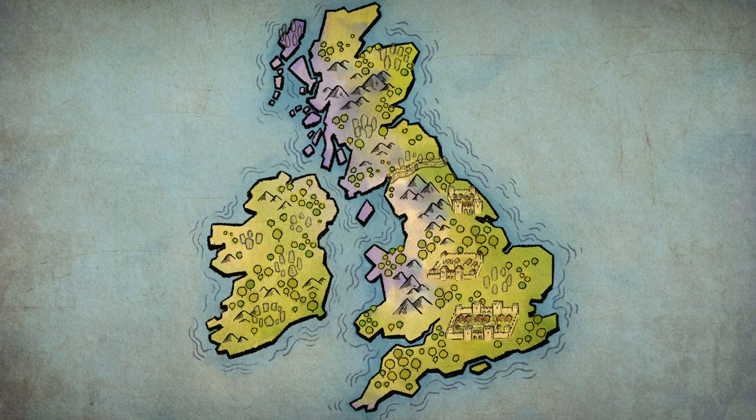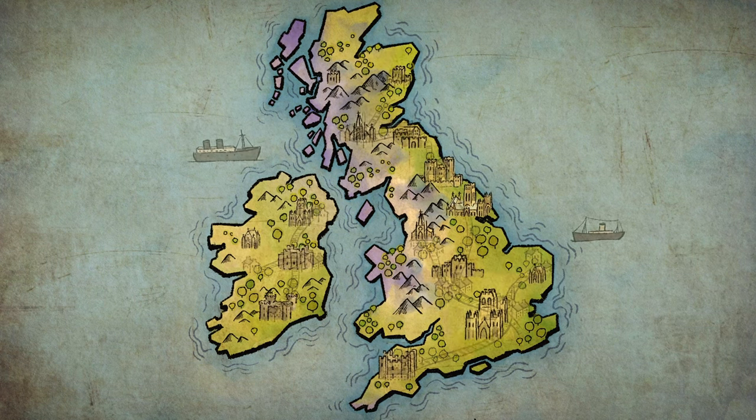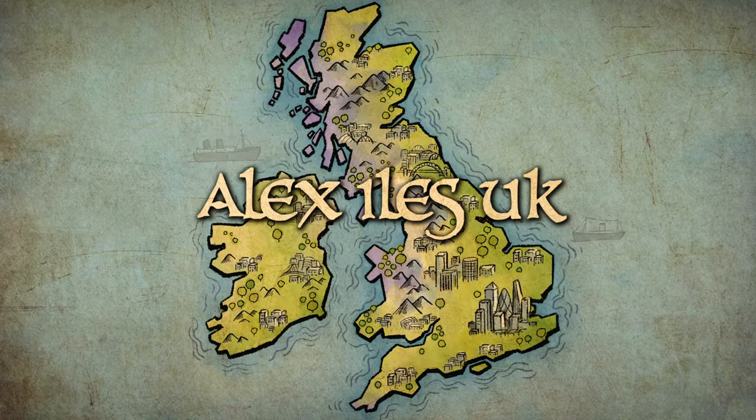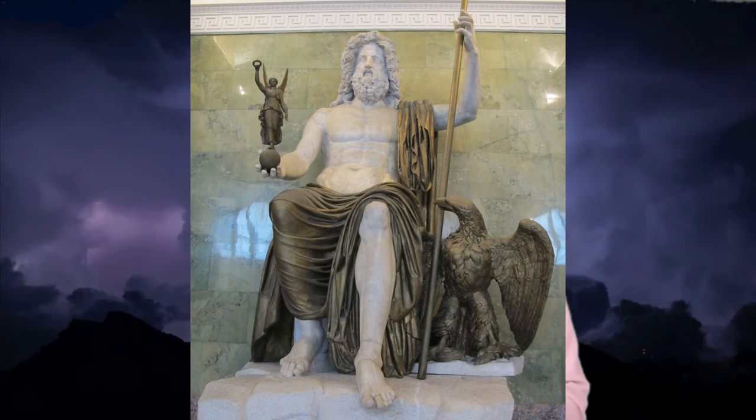Hello, my name is Alex Isles and in today's episode we're going to be looking at Jupiter — the greatest and the best — and one of his aspects, Jupiter Dolichenus. Welcome back; in today's episode we're going to be looking at Jupiter and Jupiter Dolichenus.